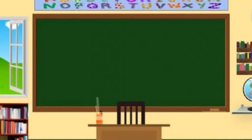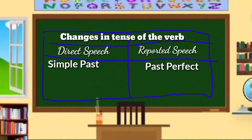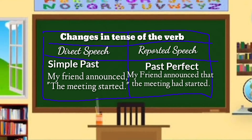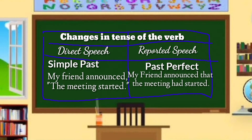When the reporting verb is in past tense, the reported verb changes depending on its tense. Simple past in direct speech becomes past perfect in reported speech. For example — DS: My friend announced, 'The meeting started.' RS: My friend announced that the meeting had started. The verb 'started' (simple past) becomes 'had started' (past perfect).